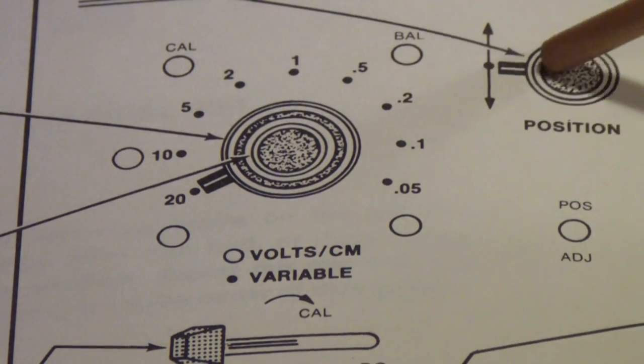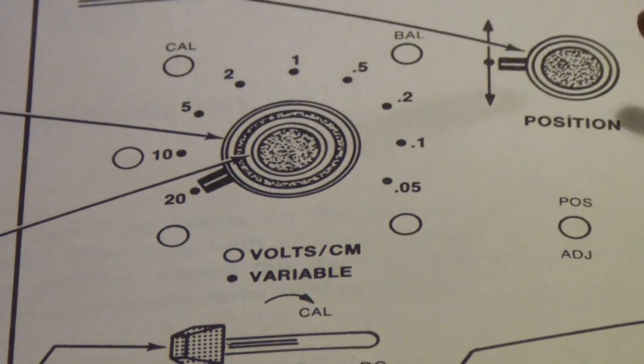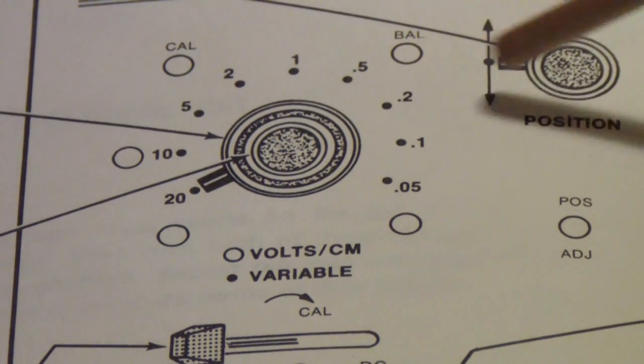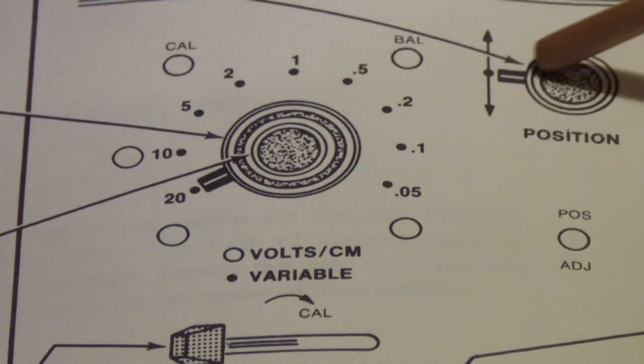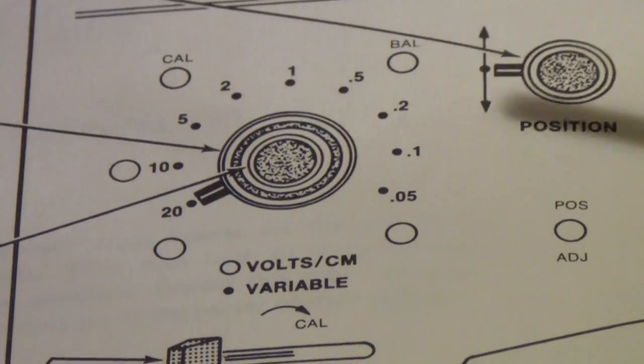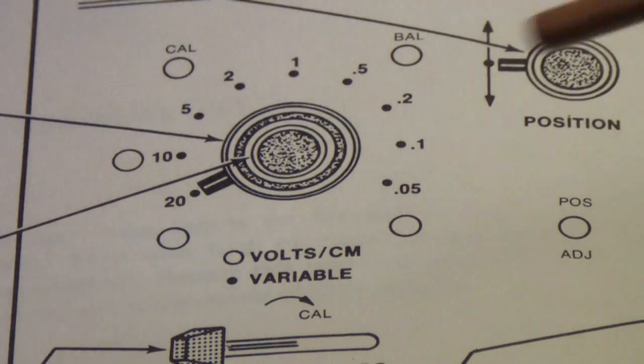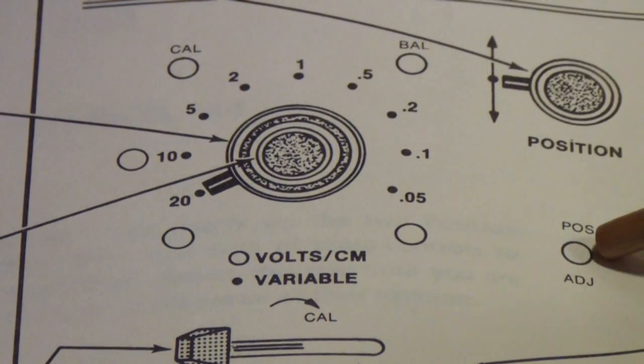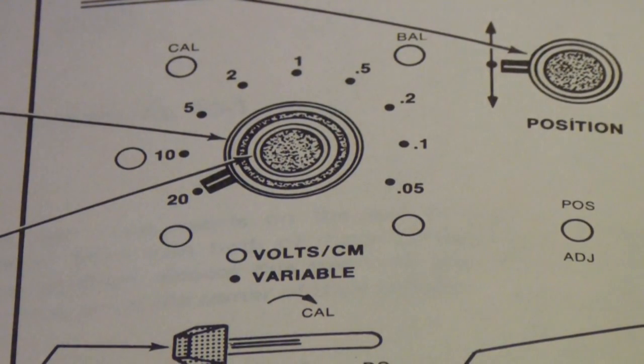For example, this one is to center the position adjust, that is, the position control for the vertical position. The overtime would drift, and if you set it back to the center of its range so that, for example, when you have this pointed at the nine o'clock position, that the trace would be in the middle of the screen, you would periodically have to move this adjustment with a screwdriver through the front panel.